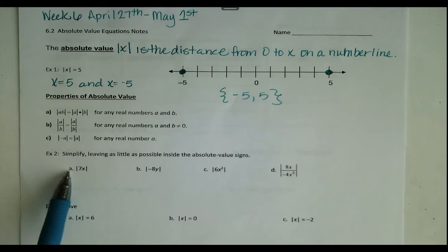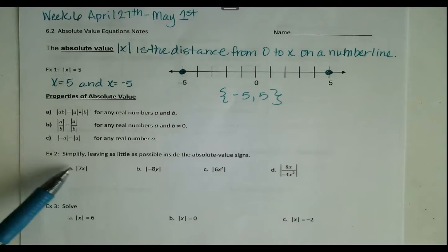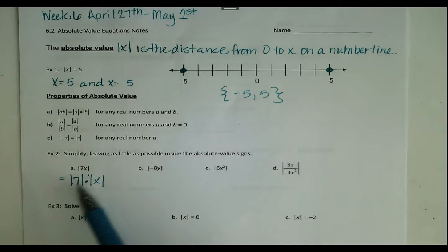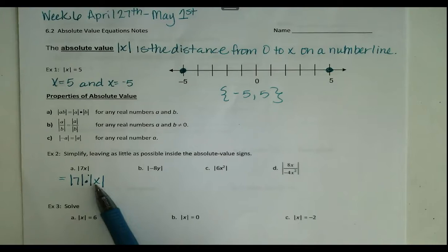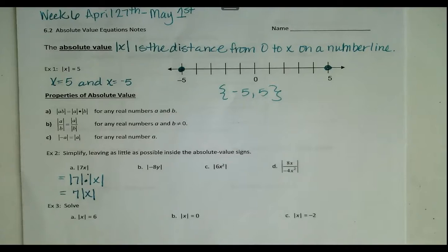For example 2, letter A, we have the absolute value of 7x. You can separate the 7 and the x, giving us the absolute value of 7 times the absolute value of x. We can simplify further: the absolute value of 7 is just 7. But we cannot remove the absolute value from x because we don't know its value — if it were negative 1, we'd need the absolute value to make it positive. So we simplify this to 7 times the absolute value of x.